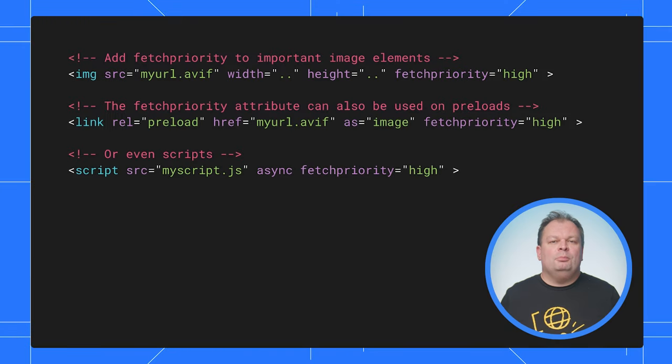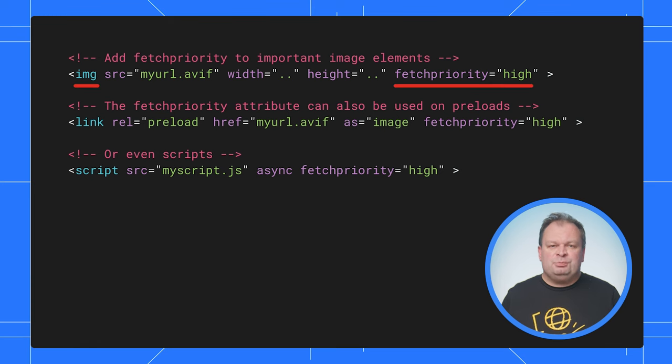Let's talk about Fetch Priority next. Fetch Priority is an API to allow you to tell the browser that a resource is higher or lower priority before it figures it out for itself. For LCP images, developers probably know which one is the largest content when designing a page, so they can say, 'Hey browser, trust me, this one is important. Don't wait around to start fetching it.' This API might sound complicated, but it's not at all — it's as simple as using the fetchpriority HTML attribute on your image element.